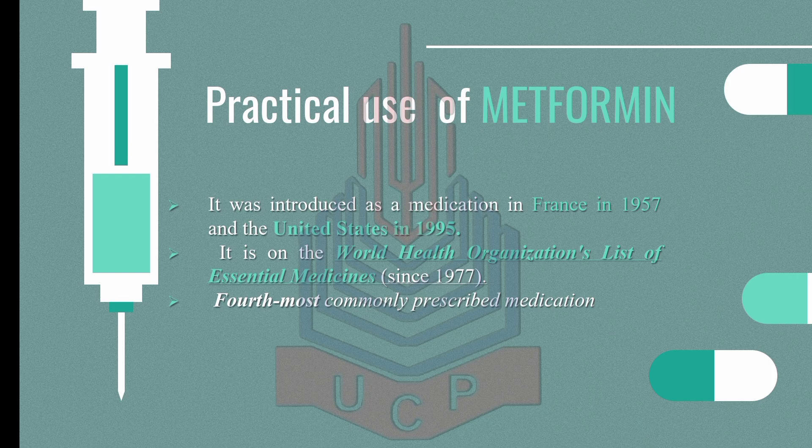Metformin was introduced in the United States in 1995. It has been on the World Health Organization's list of essential medicines since 1977. In 2019, it was the fourth most commonly prescribed medication in the United States, with more than 85 million prescriptions written for over 17 million patients.